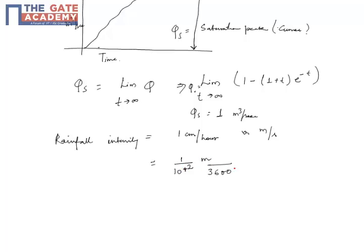So it would be equal to 1 by 360,000 meter per second. So Q_s, that is discharge.